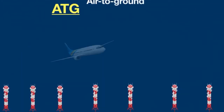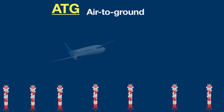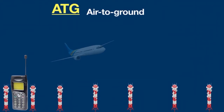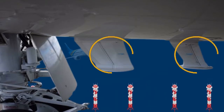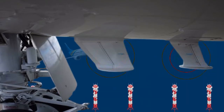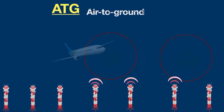ATG — Air-to-Ground — also known as ground-based technology. ATG Wi-Fi works similarly to your mobile phone, which sends and receives signals through its antenna. On an aeroplane, there are a couple of antennas located underneath the body that send and receive signals to and from towers placed on earth.